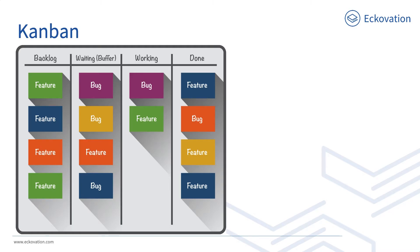Kanban is a popular framework used to implement agile software development. It requires real-time communication of capacity and full transparency of work. Work items are represented usually on a Kanban board, allowing team members to see the state of every piece of work at any time. In Japanese, the word Kan means visual and Ban means card, so Kanban refers to visual cards.